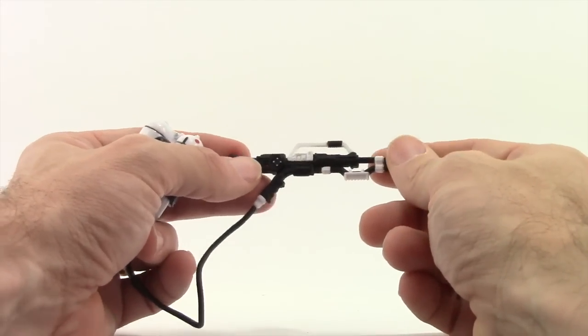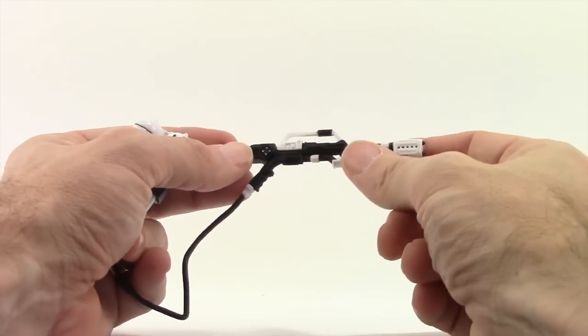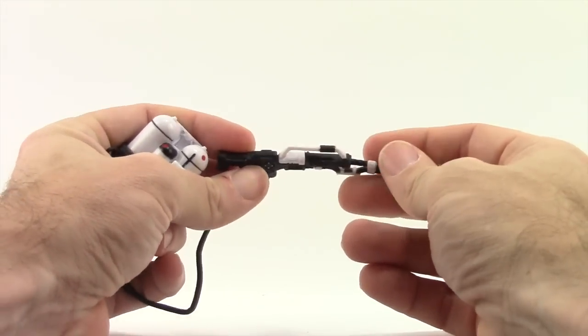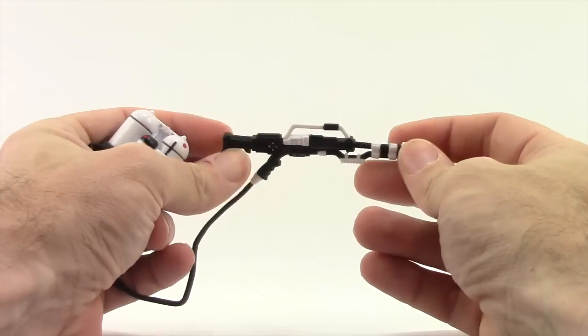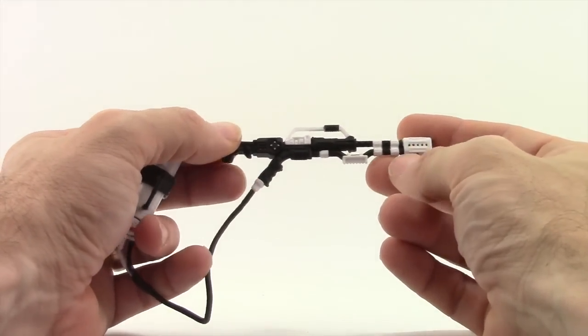Like with all the First Order Stormtroopers, these guys have black and white weapons. The weapon itself is a soft plastic, so it has flexibility, but mine came out pretty straight with no warping.